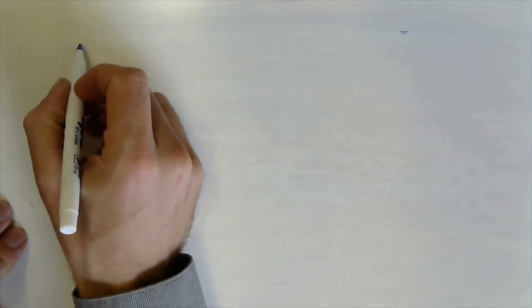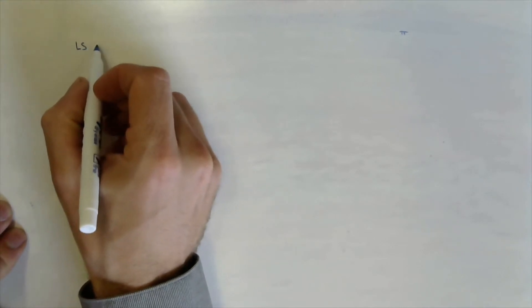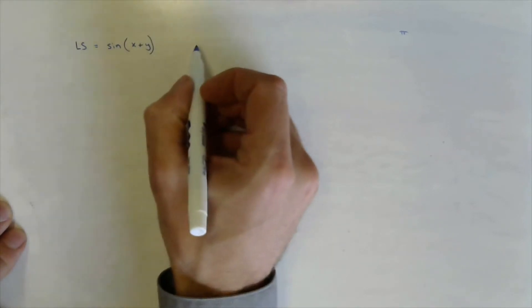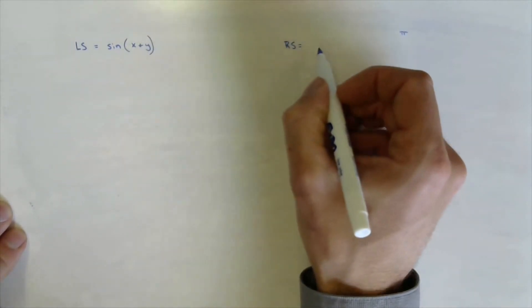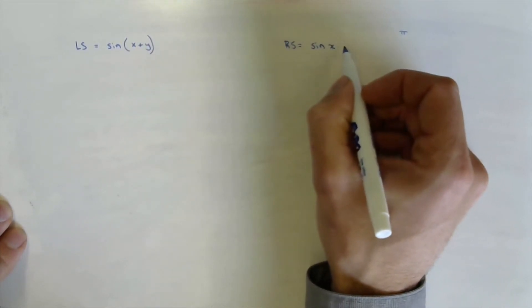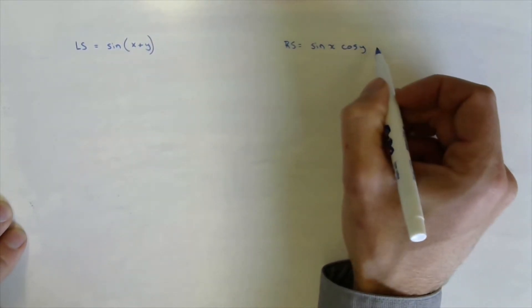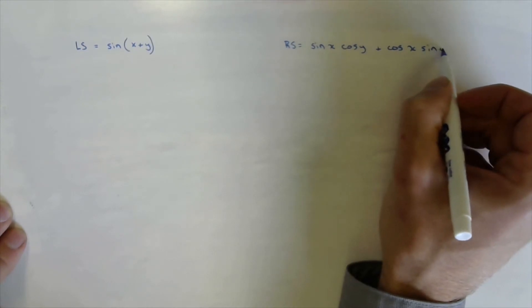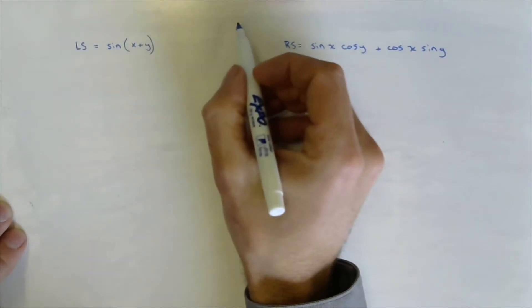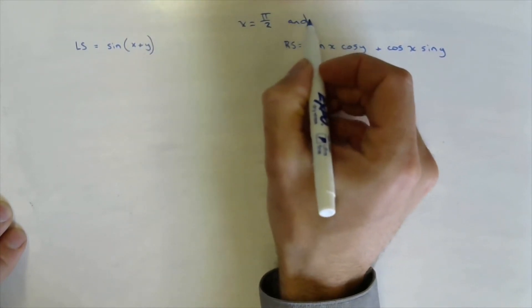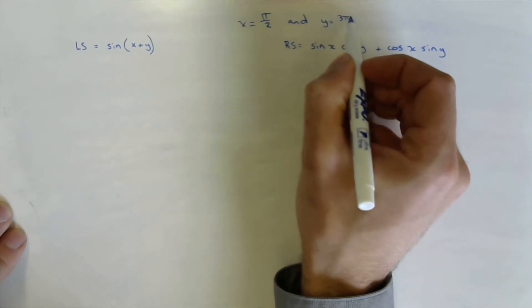Example 7b is a similar problem, this time working with the addition formula for sine. On the left side we have the sine of x plus y, and on the right side we have the sine of x times cosine of y plus cosine of x times sine of y. We want to see if that's true where x equals pi over 2 and y equals 3 pi over 4.